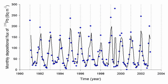Radon has no stable isotopes. 37 radioactive isotopes have been characterized, with atomic masses ranging from 193 to 229. The most stable isotope is 222Rn, which is a decay product of 226Ra, a decay product of 238U. A trace amount of the isotope 218Rn is also among the daughters of 222Rn. Three other radon isotopes have a half-life of over an hour: 211Rn, 210Rn, and 224Rn.